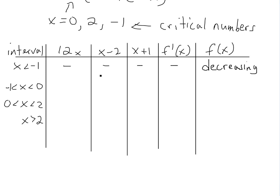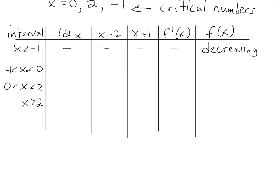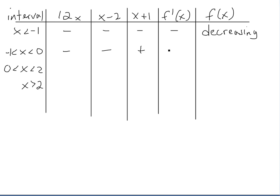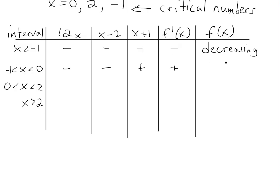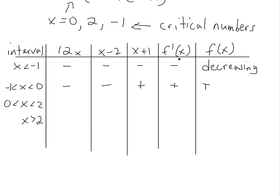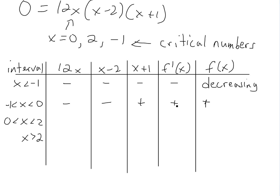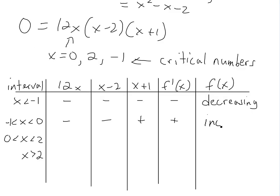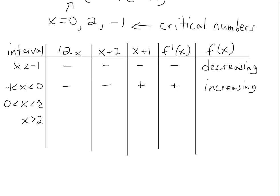So the function is decreasing when x is less than negative 1. For the next interval, when x is between negative 1 and 0: 12x is negative. For x minus 2, since x is negative, subtracting 2 makes it more negative — still negative. But for x plus 1, since x is between negative 1 and 0, for example negative 0.5 plus 1 is positive. So we have negative times negative times positive — an even number of negatives — making f prime positive. Therefore f is increasing on the interval from negative 1 to 0.